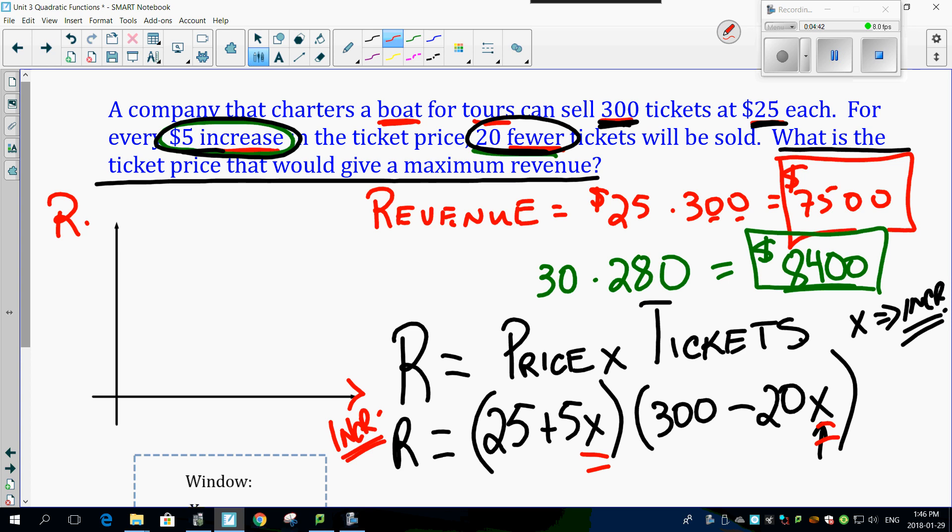So think about this. How many increments can we actually have here? 5, 10, 15. So my window setting will probably be going up by maybe 10 increments. My revenue then starts at 7,500 and it goes all the way up to 8,500. So I may have this all the way up to maybe $10,000. So I'm going to go from 0 here to 10,000 here and 0 here up to 10 increments here. Let's bring up my calculator.